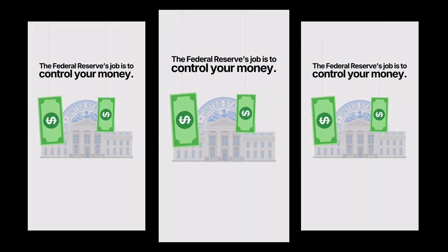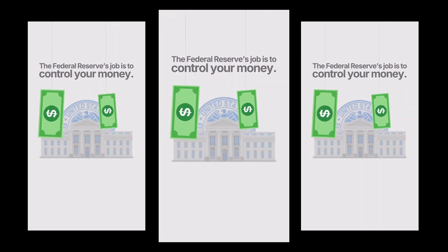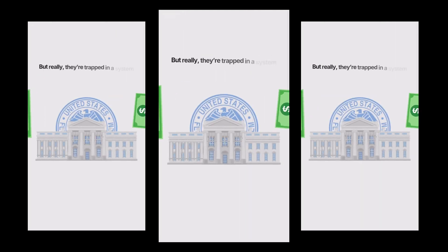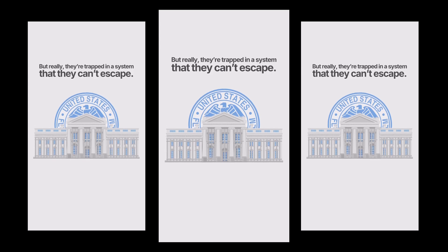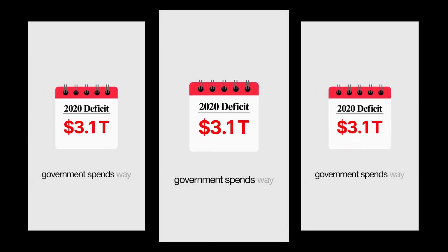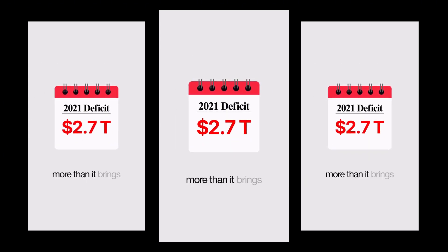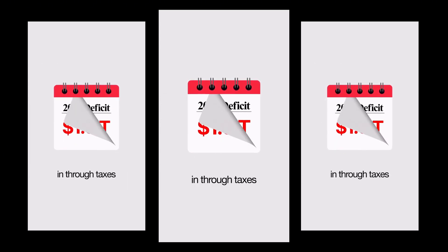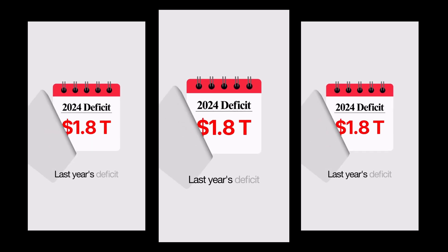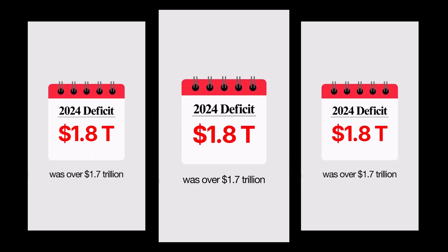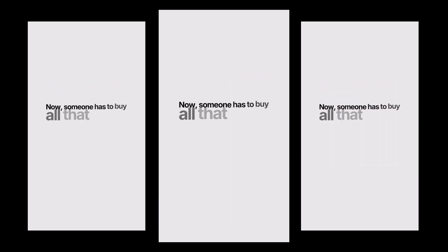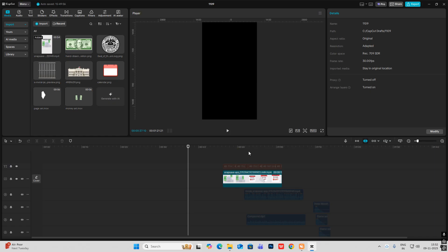The Federal Reserve's job is to control your money, but really they're trapped in a system that they can't escape. Every year the US government spends way more than it brings in through taxes — last year's deficit was over 1.7 trillion dollars. Now someone has to buy all that debt.